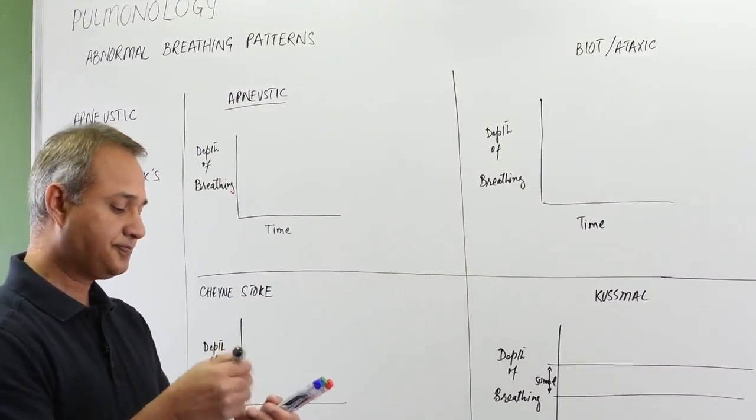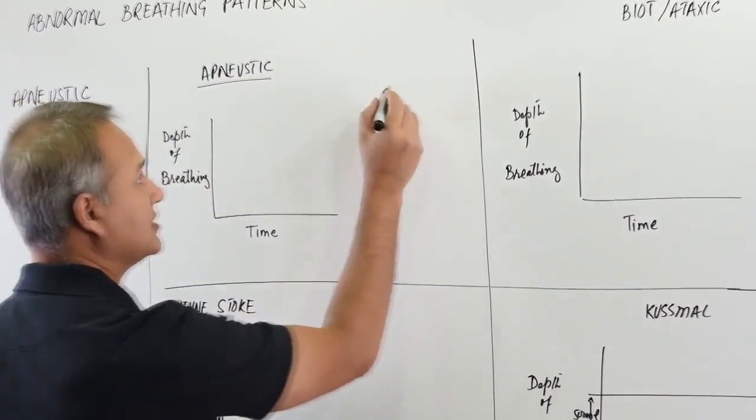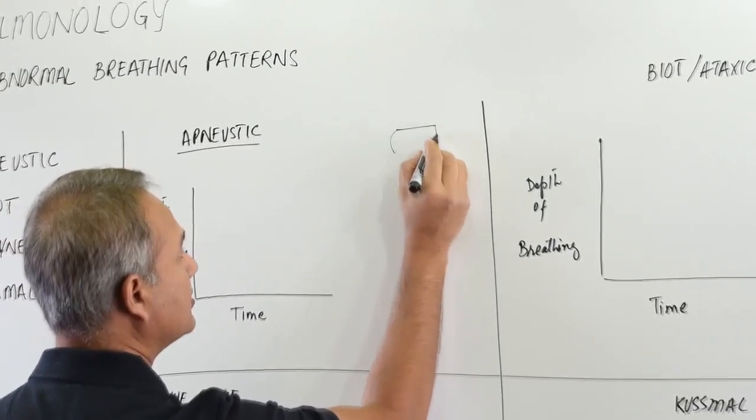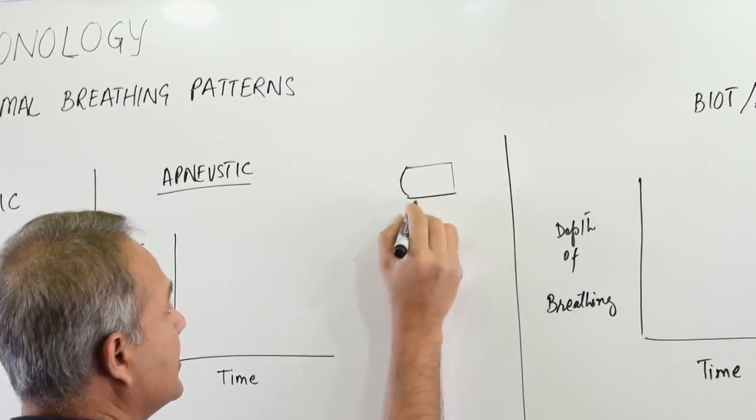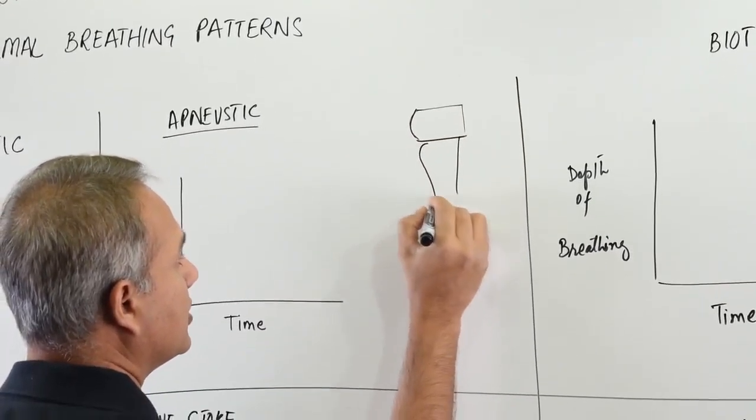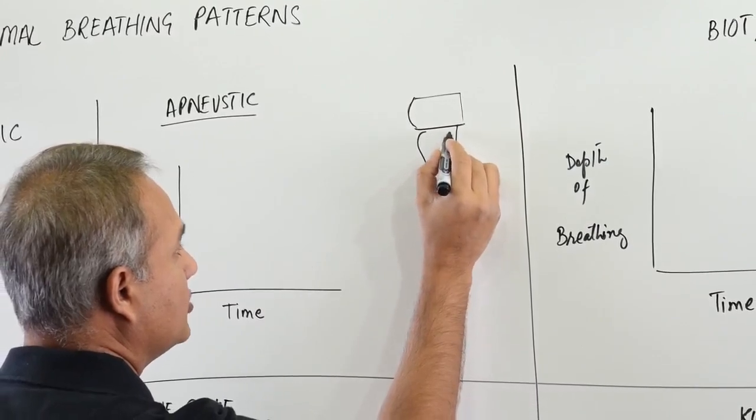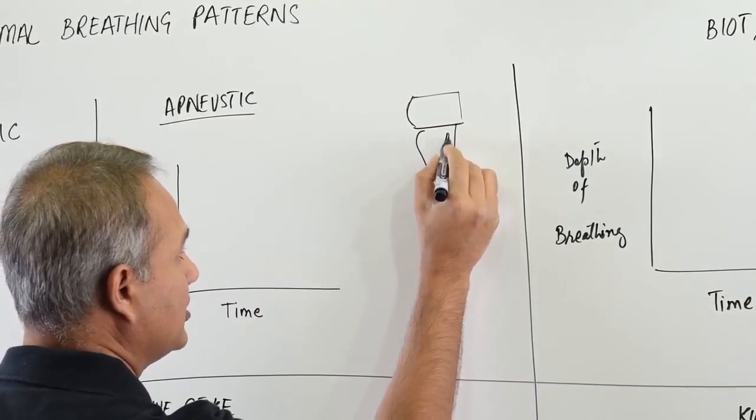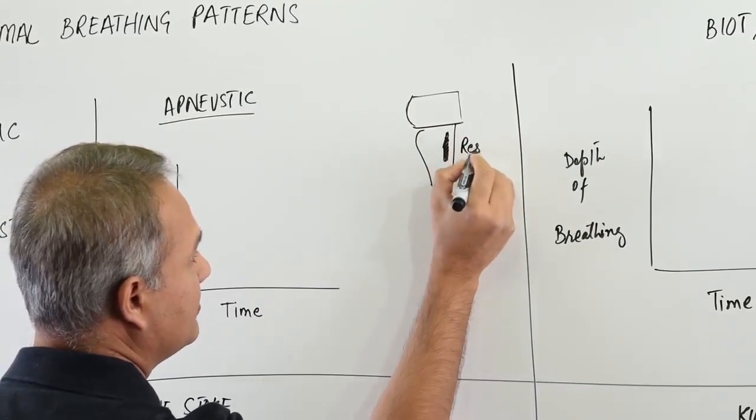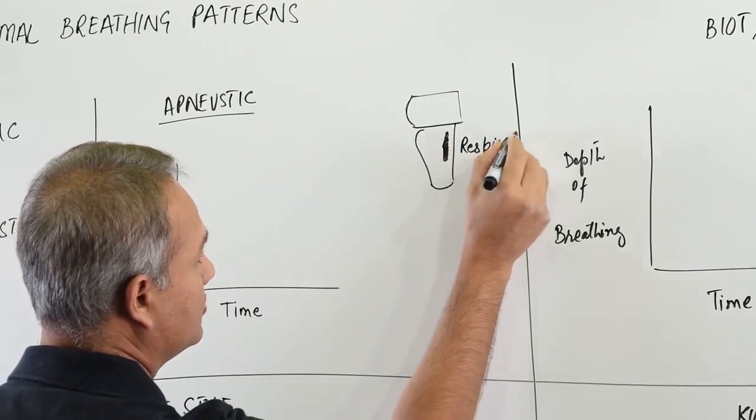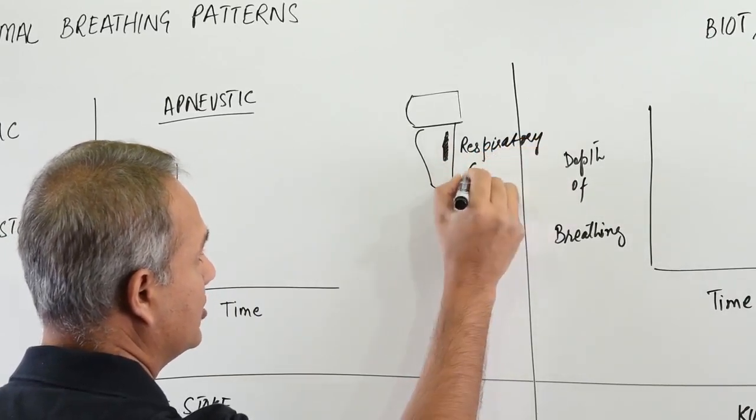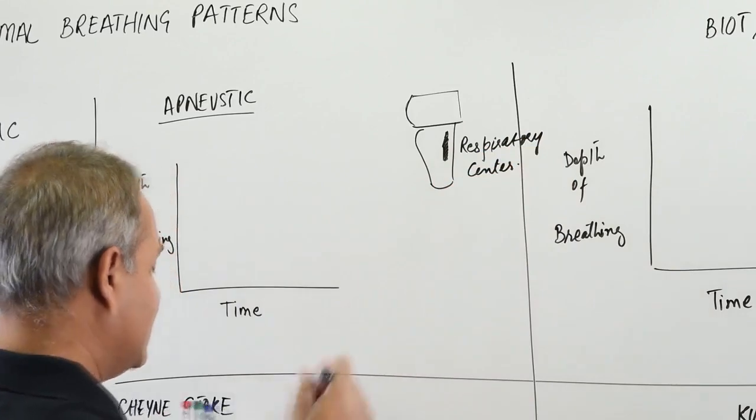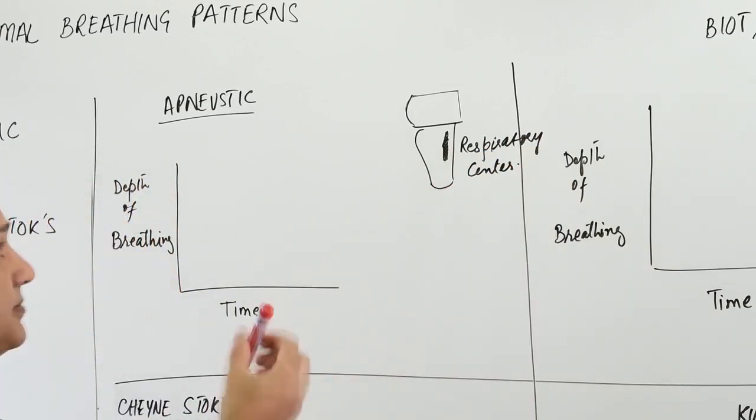What that means is it is a breathing pattern. Let's see for a second - let's say this is pons and this is medulla. Remember that in the dorsal medulla there is a respiratory center. This center is receiving impulses from pons.